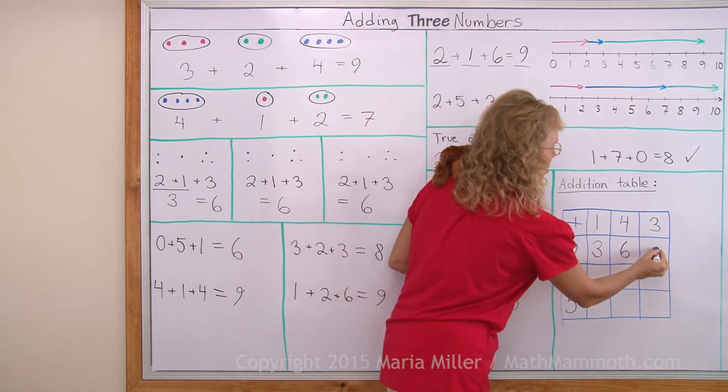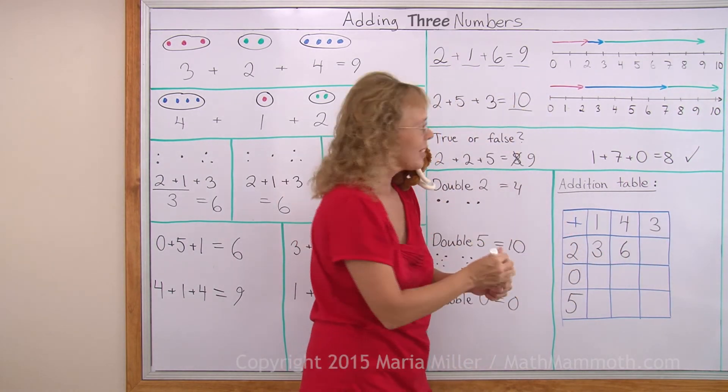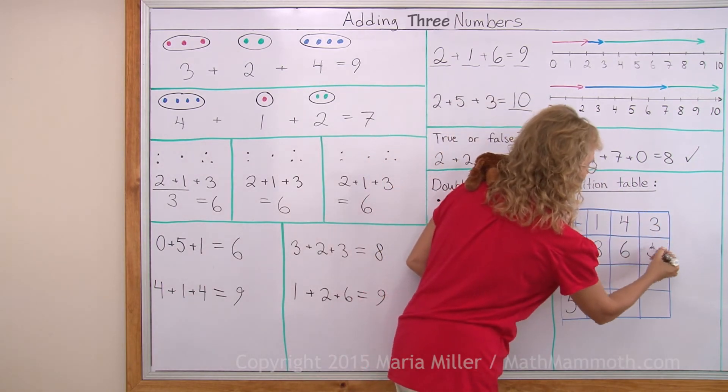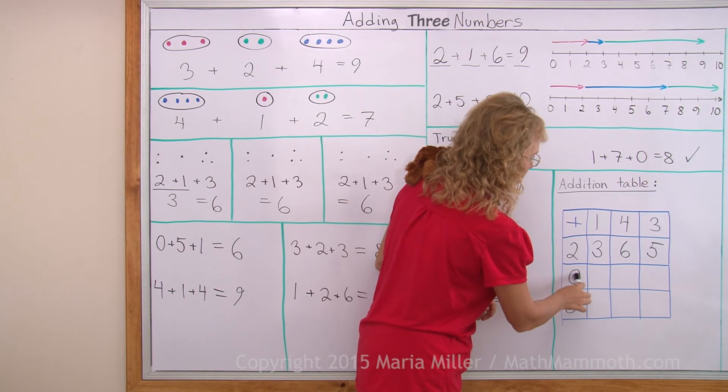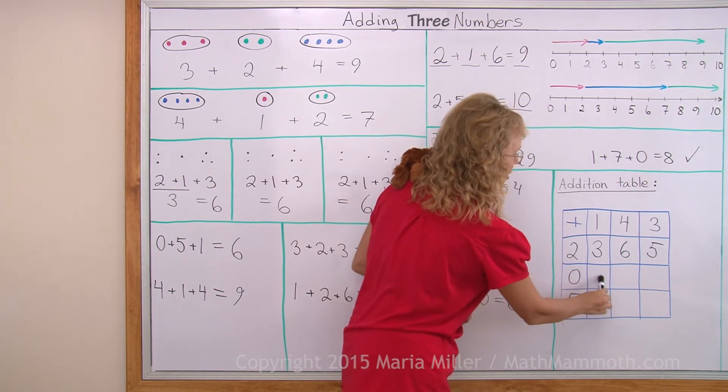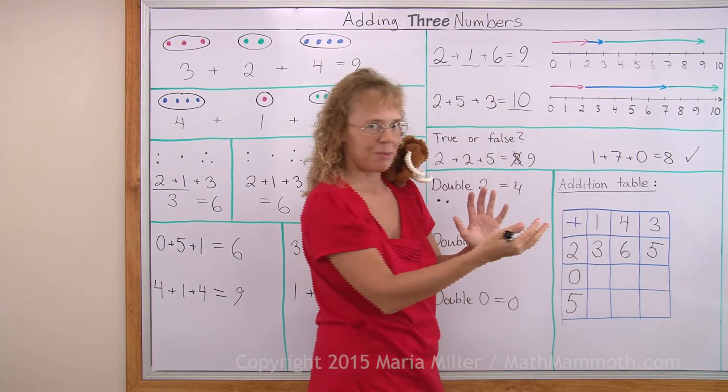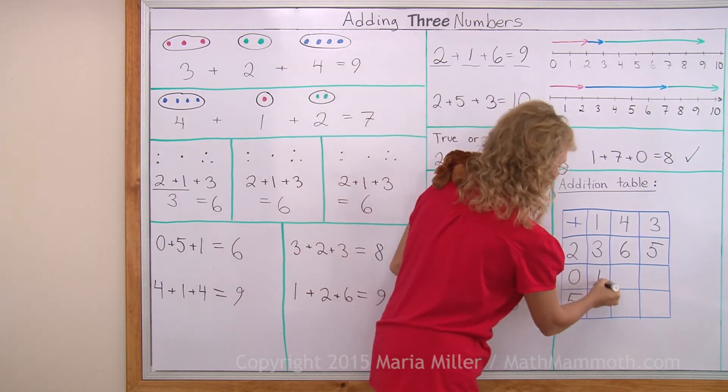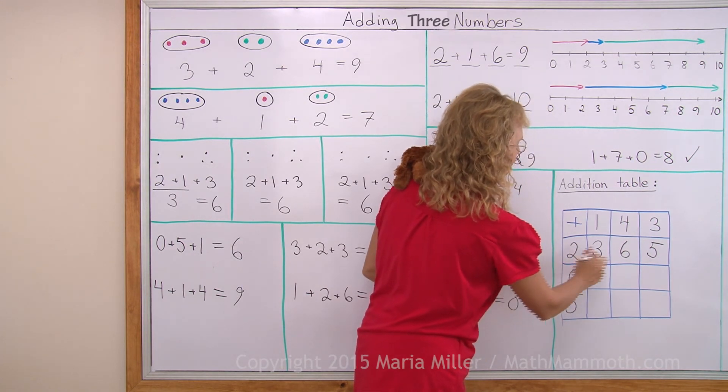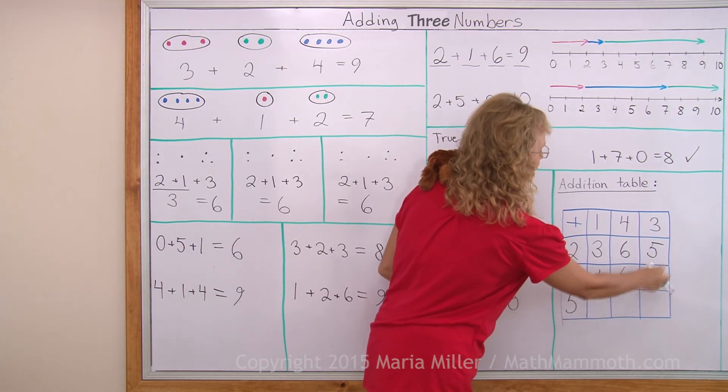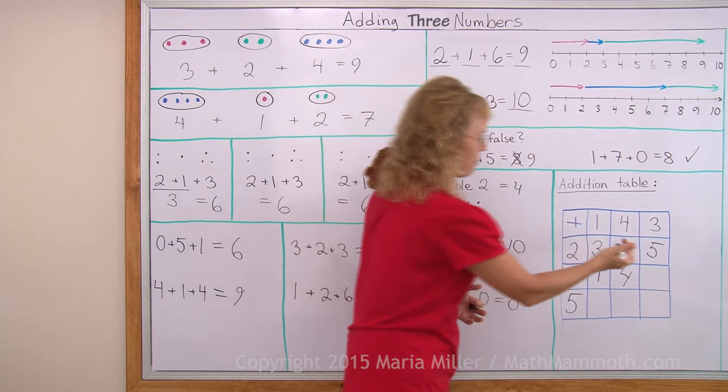For this one, look up, three, and look all the way here, two. Three plus two, that is five. Now we have zero here. Look up, one. Look here, zero. One and zero, one. Over here, look up, four. Look here, zero. That's four. Then look up and look to the left, three plus zero, three.